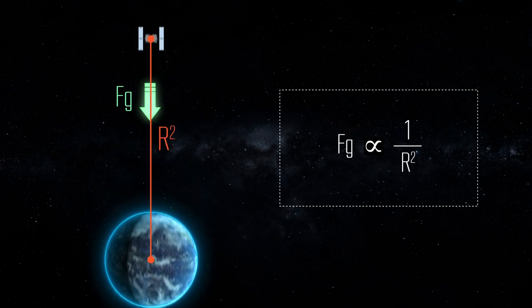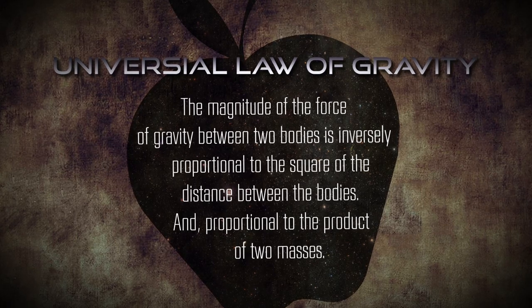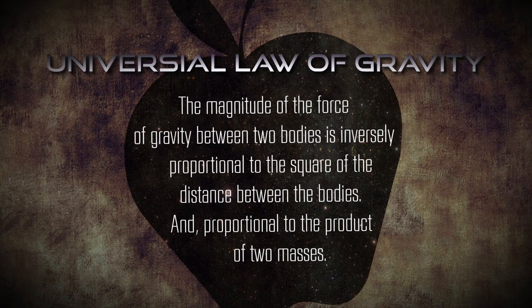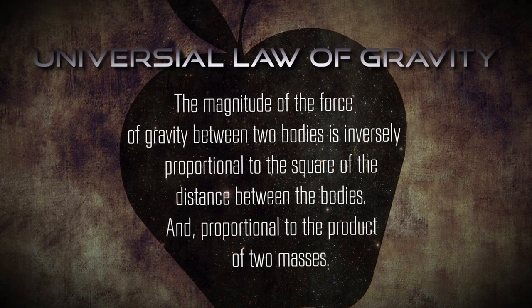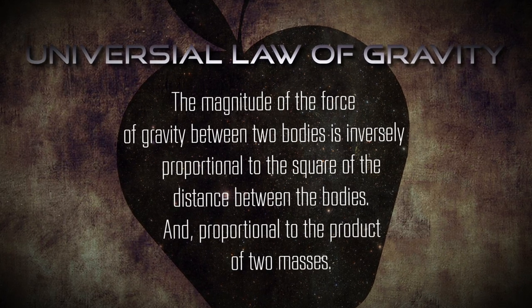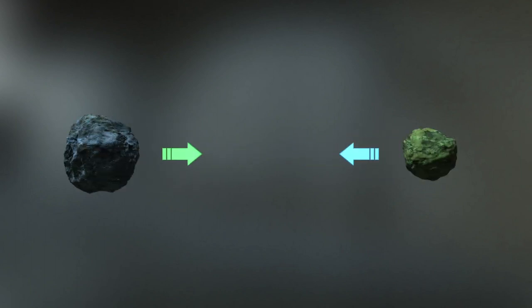You can now see that as the distance between the earth and satellite increases, the force of gravity decreases. Specifically, as the radius or distance doubles, the force of gravity decreases by a factor of four. And as the distance triples, the force of gravity decreases by a factor of nine, and so on. Newton's universal law of gravitation can be restated as: the magnitude of the force of gravity between two bodies is inversely proportional to the square of the distance between the bodies and proportional to the product of their two masses. More mass, more gravity. More distance, less gravity. We now understand how gravity is the enabler of orbits and that the force of gravity between two objects decreases as the distance between them increases.